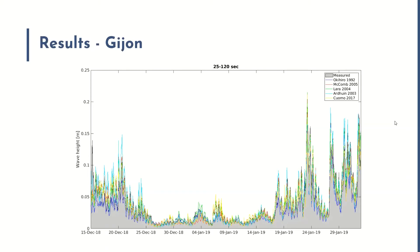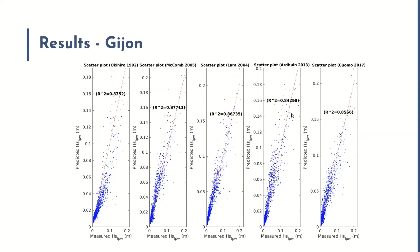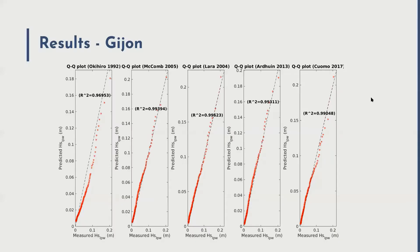From Gihon, these are the results in time series. The gray shaded area is the measured wave data. This is significant long wave heights, and each of the colors relates to the five different equations. When we look at the scatter plot, we can see here that it's reasonably consistent. We are picking up the main trends with most of the equations. McComb and Lara have the least amount of scatter. And when we consider that in a QQ sense, once again we're seeing very similar trends. In this scenario, the Okihiro equations have a reasonable fit as well.